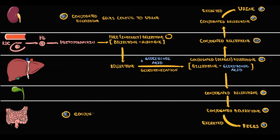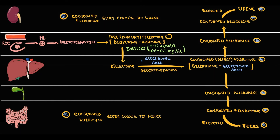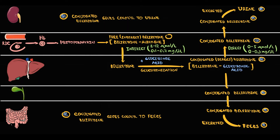The normal level of unconjugated bilirubin in the blood is between 2 and 12 micromoles per liter. Because the major portion of bilirubin that enters the liver is excreted into the bile, the level of conjugated bilirubin in the blood is lower — between 0 and 5 micromoles per liter. So the level of total bilirubin in the blood is between 2 and 17 micromoles per liter.